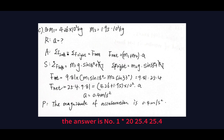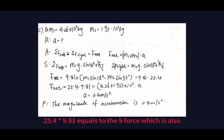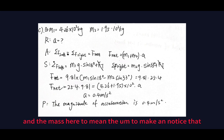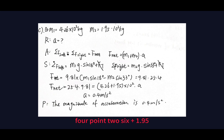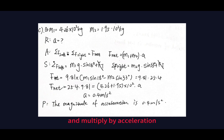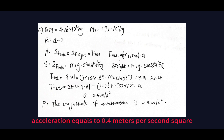After substitution, this gives 9.81 times 25.4 equals the net force. This net force also equals total mass times acceleration. The total mass is 4.26 plus 1.95 times 10 squared kilograms. After calculation, acceleration equals 0.4 meters per second squared, so the magnitude of acceleration is 0.4 m/s².